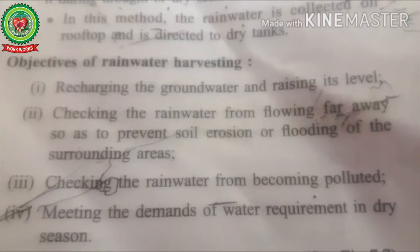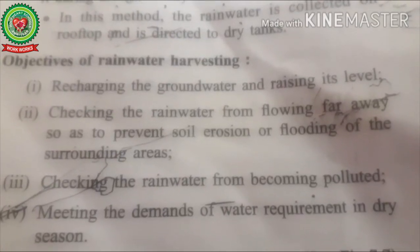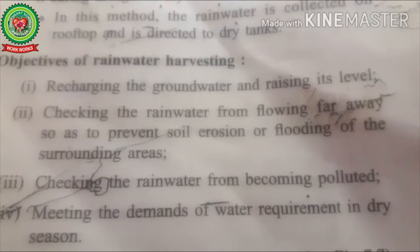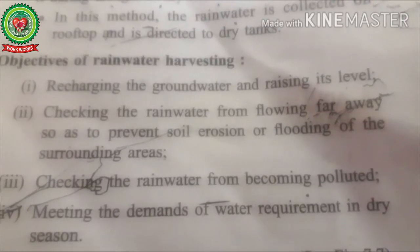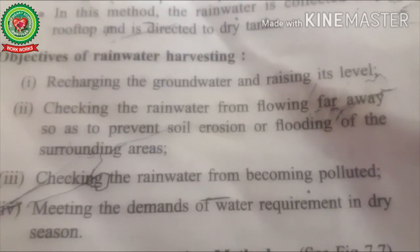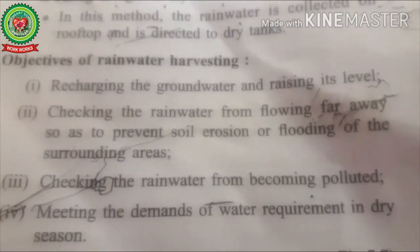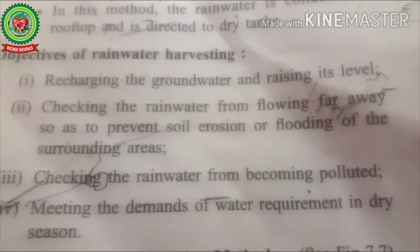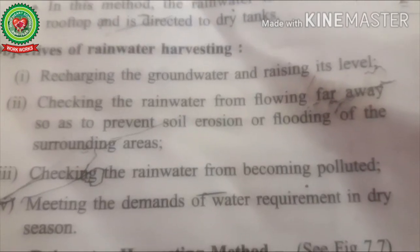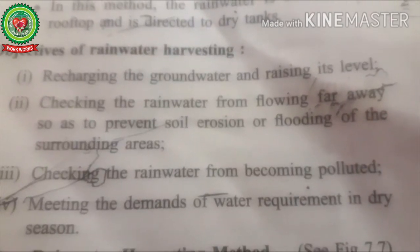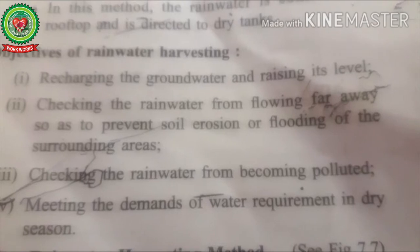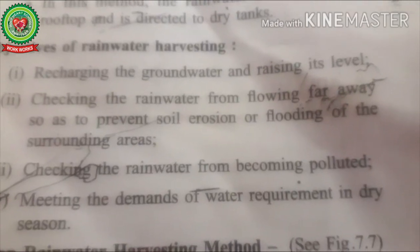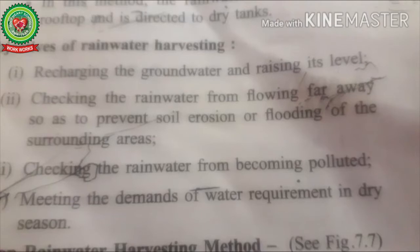Another objective is checking rainwater from flowing far away so as to prevent soil erosion. Soil erosion means the removal of the top layer of soil by wind and water. Flooding means overflow of water onto normally dry land, which can be due to dam breaks or heavy rainfall. When rain falls on the landscape, some of it seeps into the ground to refresh groundwater, but most flows as surface runoff. By harvesting water we can stop this and use it later.